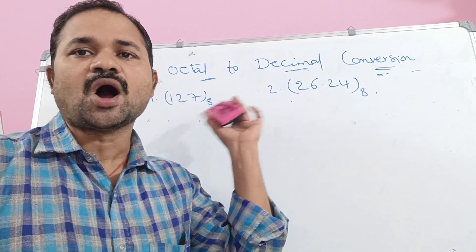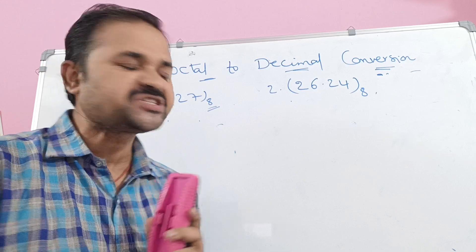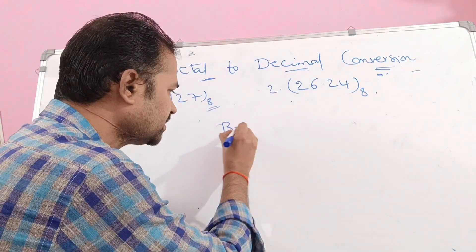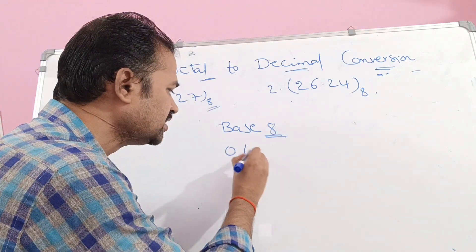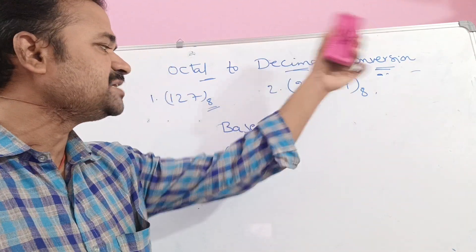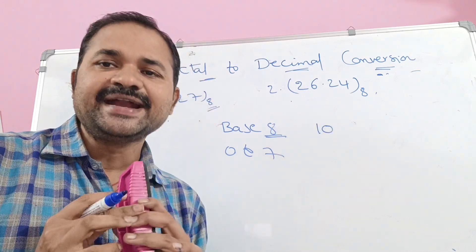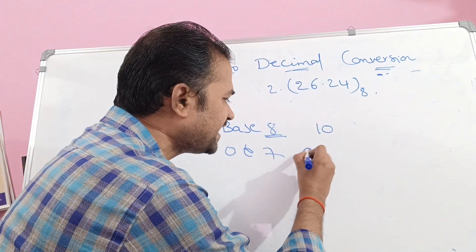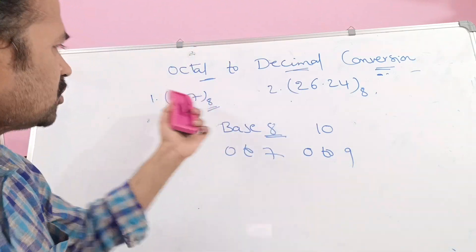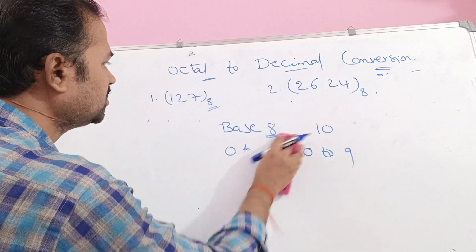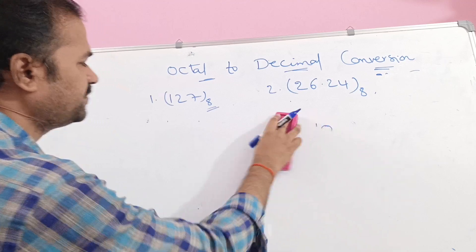Now let us discuss octal to decimal conversion. Octal means base value is 8. Octal numbers mainly contain 8 symbols from 0 to 7. Decimal means base value is 10, and decimal numbers mainly contain 10 symbols from 0 to 9. Two octal numbers are given, and we have to convert the corresponding octal numbers into decimal numbers.